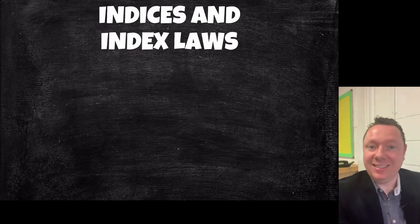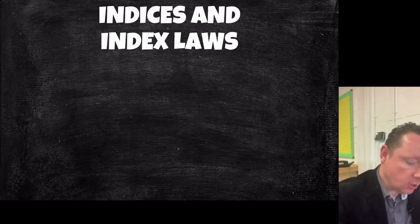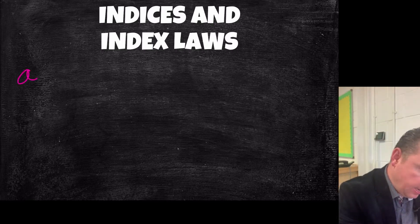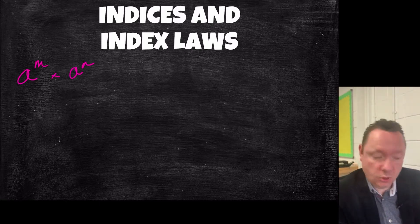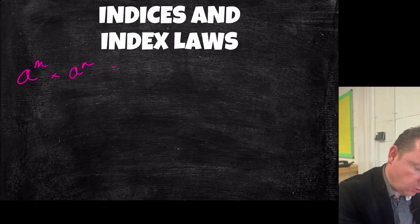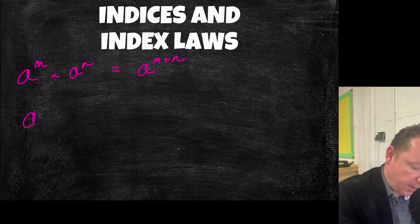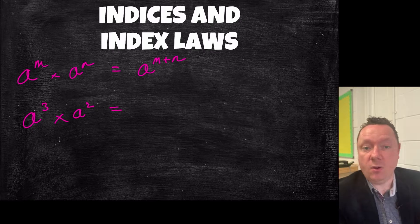What are the laws of indices? Well, indices are powers. So if I have a to the power of m and I times by a to the power of n — m and n just mean any numbers — I can just add the powers. That's law one: a to the power of m plus n. A simple example of that would be if I had a cubed times a squared, the answer would be a to the power of five.